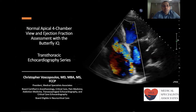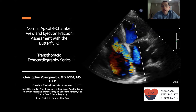Thank you for watching another segment in our transthoracic echocardiography series. This one covers how to obtain a normal apical four-chamber view, and what basic measurements we can obtain from that view. Also, if we're using the Butterfly IQ, how to obtain an ejection fraction with the software.